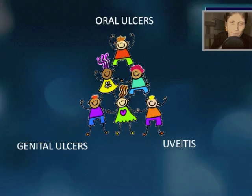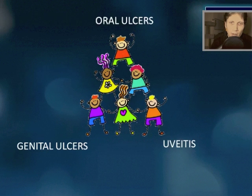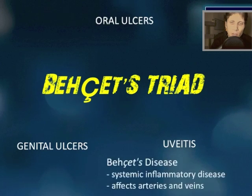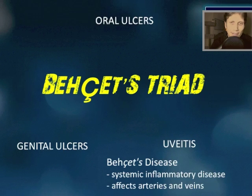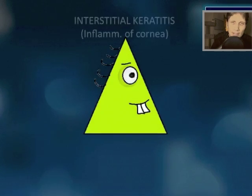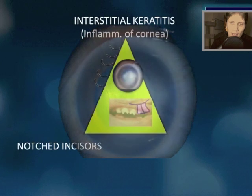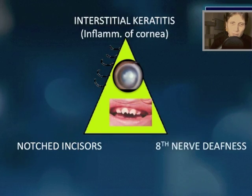Oral ulcers, genital ulcers, and uveitis — name the triad and the associated disease. This is Behçet's disease (B-E-H-C-E-T), a systemic inflammatory disease that can affect both the arteries and the veins.